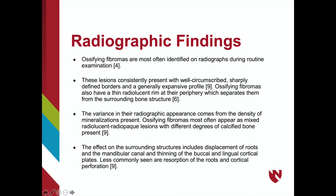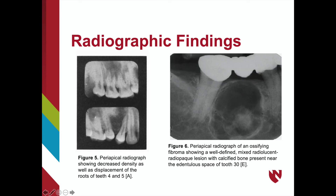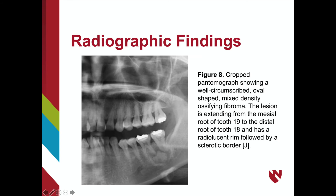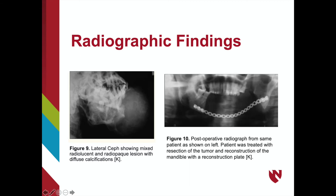Ossifying fibromas commonly cause displacement of the roots and mandibular canal, as well as cortical bone expansion, while less commonly causing root resorption and cortical perforation. Figure 5 shows decreased bone density compared to normal bone with displacement of roots. Figure 6 is a periapical view of a well-defined mixed lesion showing dense calcified bone within the radiolucency. Figure 7 is the axial view of a CBCT showing lingual cortical plate expansion and a well-defined border. Figure 8 is a cropped panoramic panel representing a classic example: a single, well-circumscribed, mixed radiolucent-radiopaque lesion with a radiolucent rim extending from the mesial root of number 19 to the distal root of number 18.